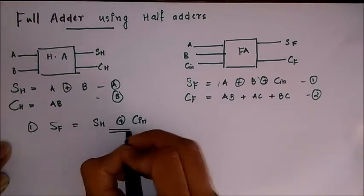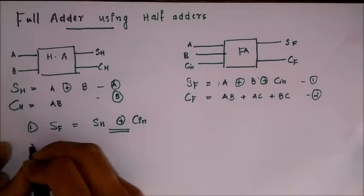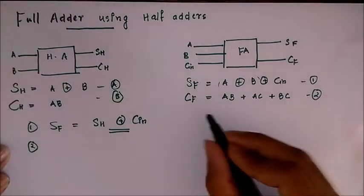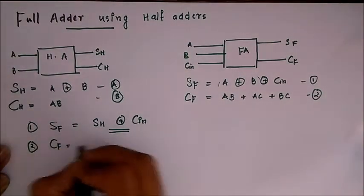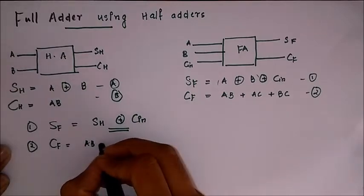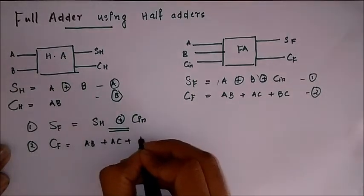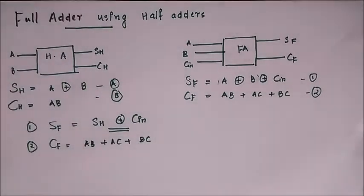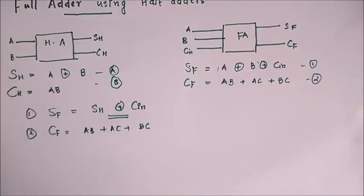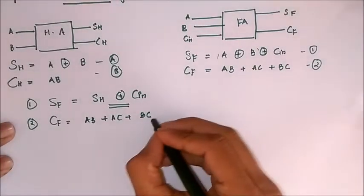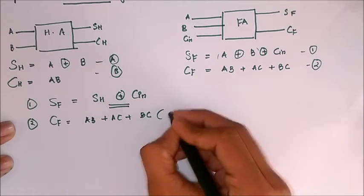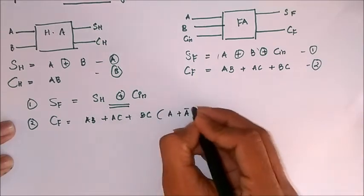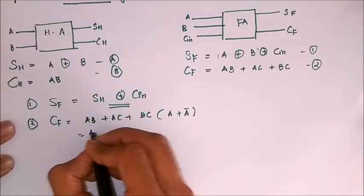So SF is directly equal to SH XOR Cin. Now for equation 2, we have to express CF in terms of SH and CH, so we have to do some simplifications.